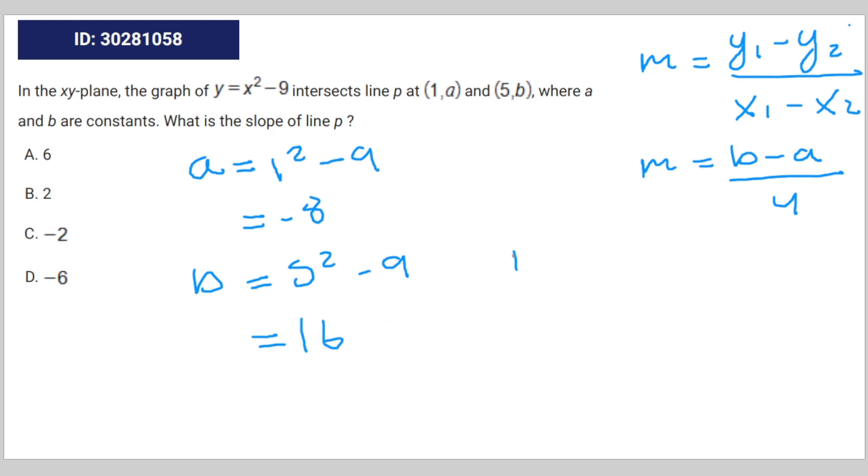So for the slope formula, it's going to be m equals 16 minus negative 8 over 4, which equals 24 over 4, which equals 6. Therefore, the correct answer is A, 6.